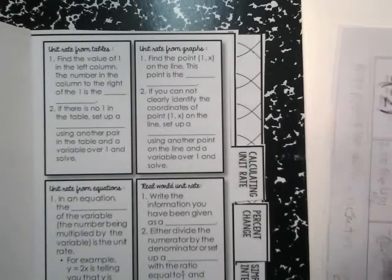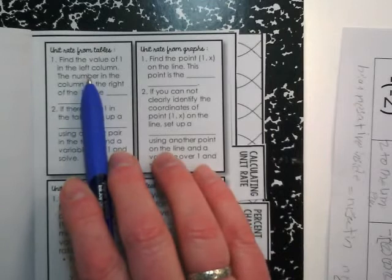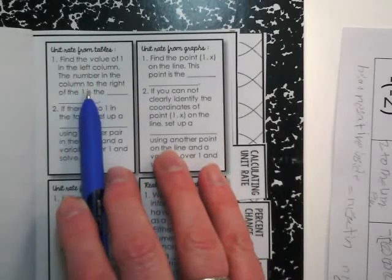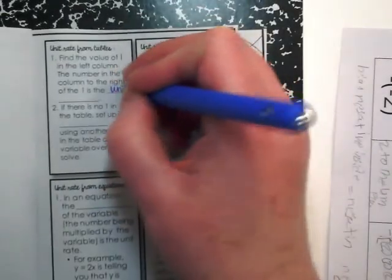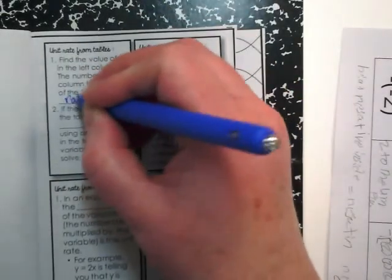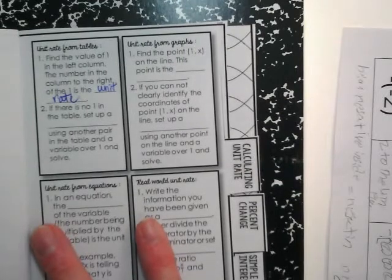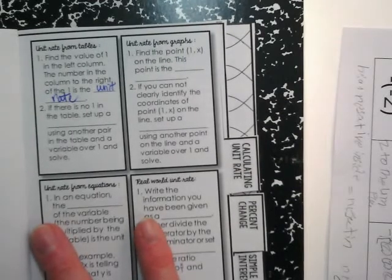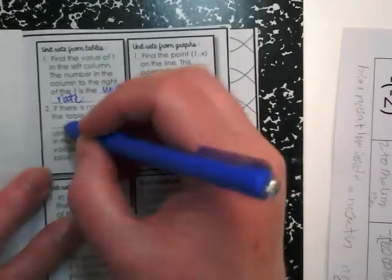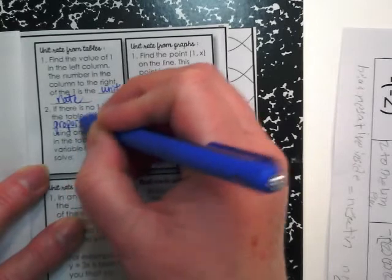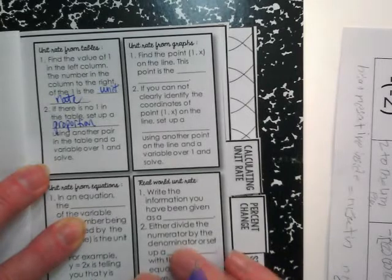To find unit rates from tables, you find the value of one in the left column. The number in the column to the right of the one is the unit rate. I really appreciate seeing so many people ready for note-taking right away. If there is no one in the table, set up a proportion using another pair in the table and a variable over one, and solve.